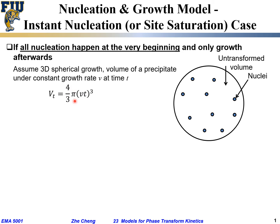The radius r, because we assumed a constant growth rate, equals the growth velocity v times t, starting from radius zero. So this equation gives us the volume of a single precipitate: V(t) = (4/3)π(vt)³. Now assume N₀ is the initial nuclei density — per unit volume at the very beginning there are N₀ nuclei.